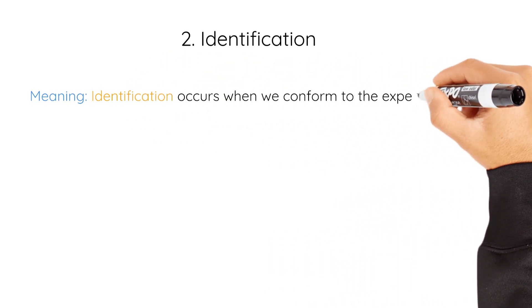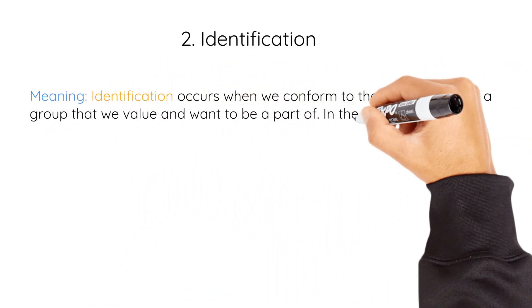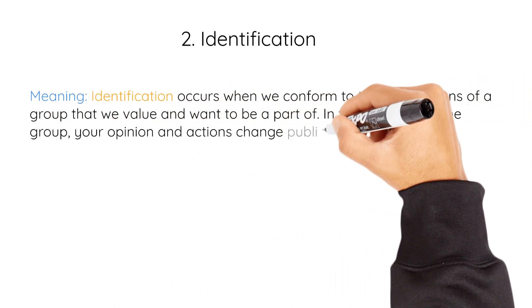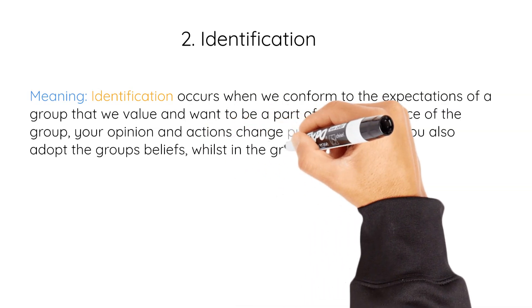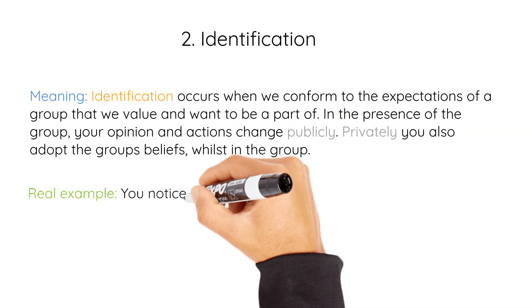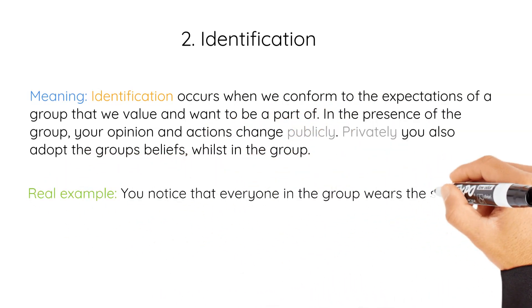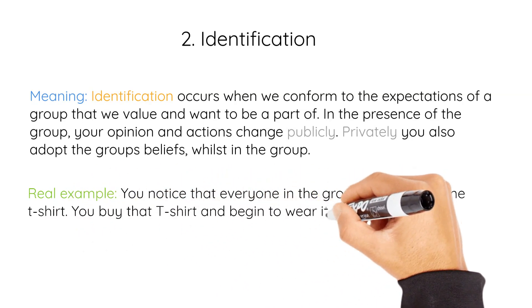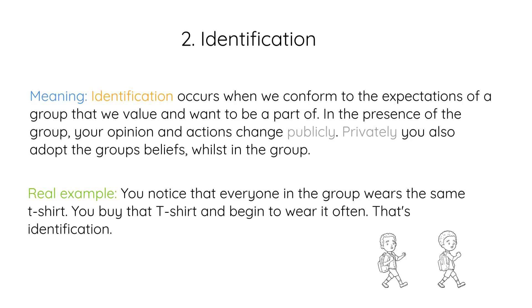Two: Identification. Identification occurs when we conform to the expectations of a group that we value and want to be a part of. In the presence of this group, your opinion and actions change publicly, and privately you also adopt the group's beliefs. For example, you notice that everyone in the group wears the same shirt, so you buy that shirt and begin to wear it often. That's identification.